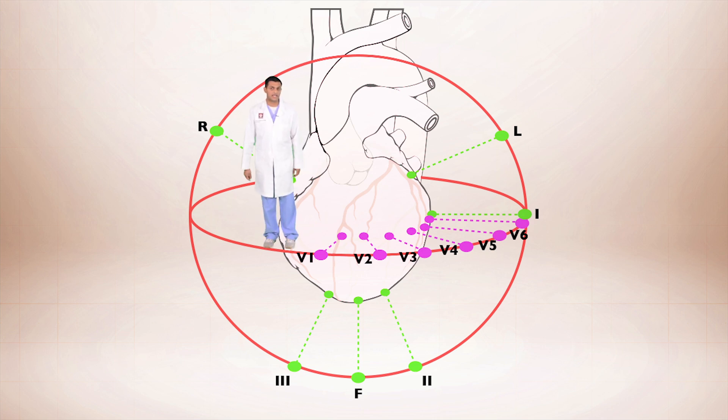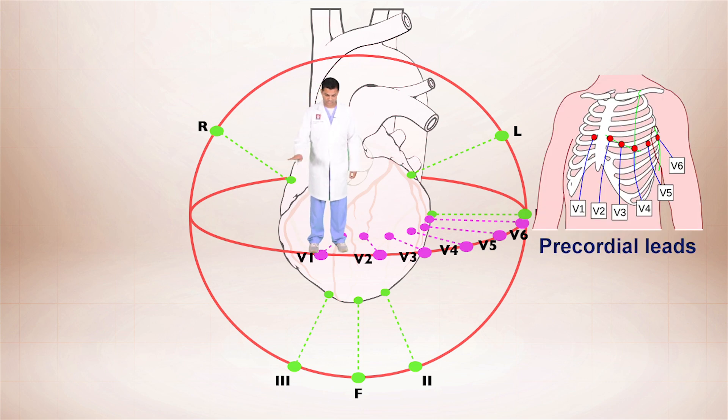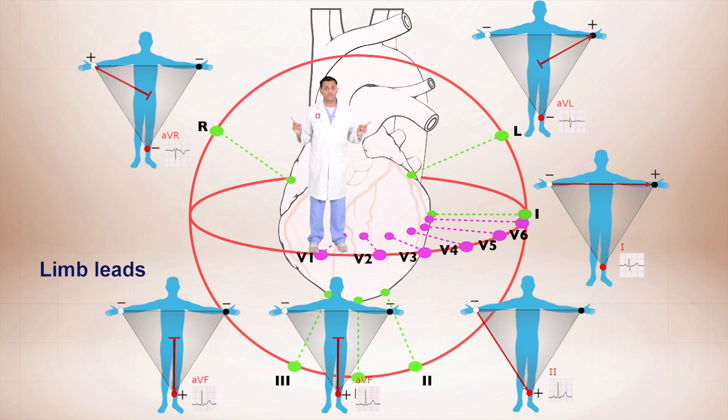So let's take a look at this diagram here. So we're taking a look at the heart from 12 different angles, right? And so we have two sets of leads. We have the precordial leads right here, which are the chest leads, the purple ones, that are looking at the heart from the horizontal axis. And then we have the green leads, which are looking at the heart from the frontal axis. And we can take this to take a look at certain portions of the heart.